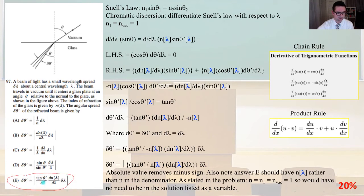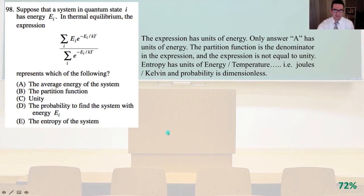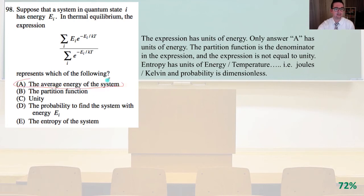Problem 98: suppose that a system in quantum state i has energy Eᵢ; in thermal equilibrium the given expression represents which of the following? The expression has units of energy, and only answer A has units of energy. So we can stop there and select answer A.